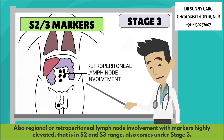Regional or retroperitoneal lymph node involvement with markers highly elevated — that is in the S2 or S3 range — also comes under Stage 3.